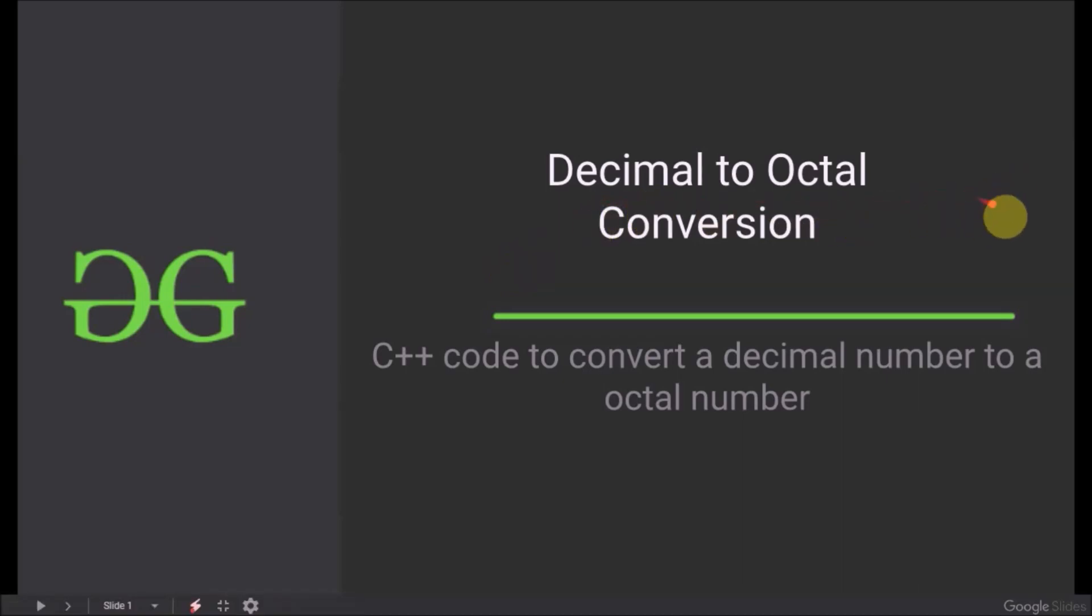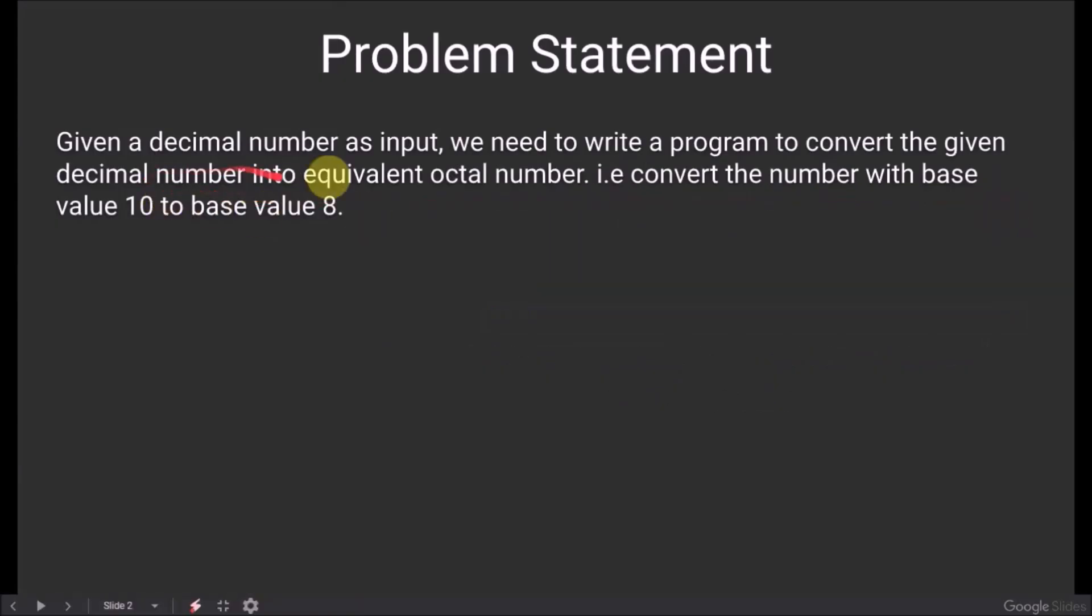Let us look at the problem statement. Given a decimal number as input, we need to write a program to convert the given decimal number into equivalent octal number.